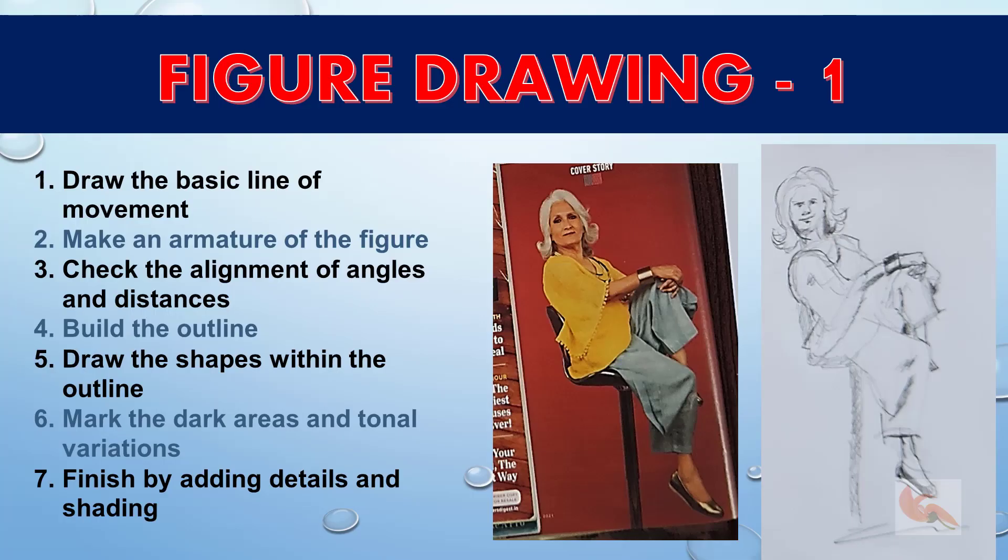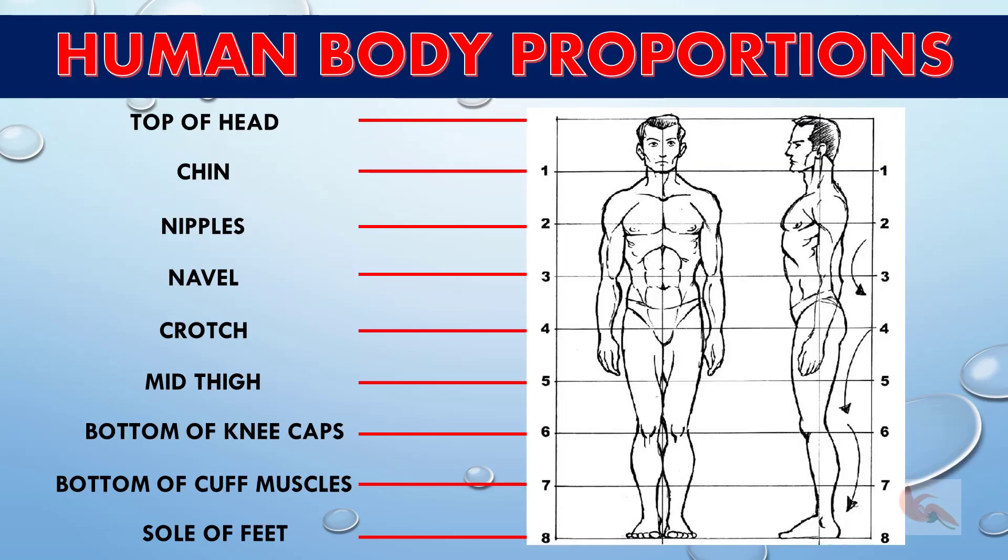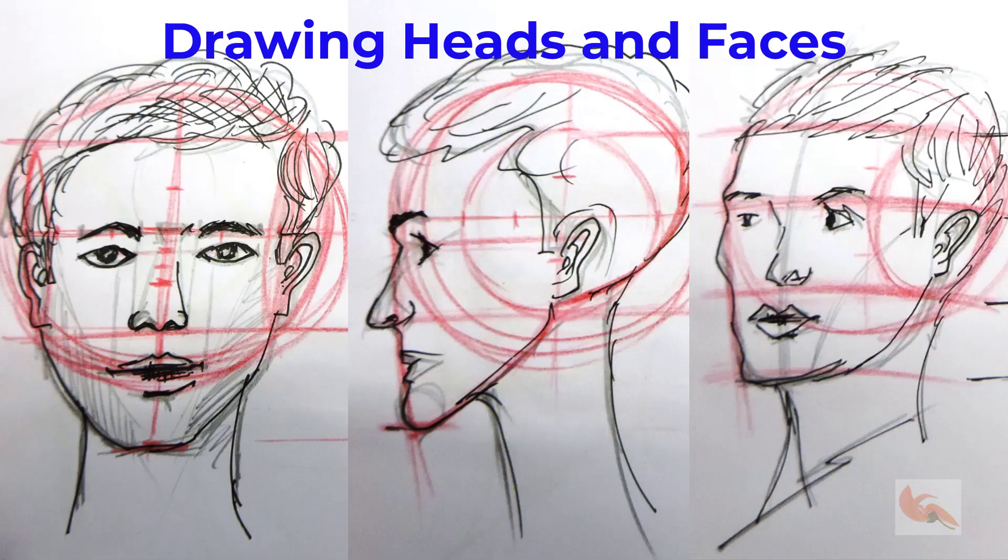In the first part, we have seen how we can build a figure from gesture drawings. Today we will see general human body proportions and drawing heads and faces.